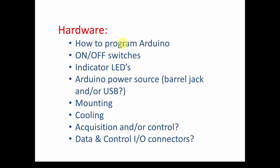We have to think about on/off switches — for power to the Arduino and for what we're measuring. What about indicator LEDs so we know when something is powered on? And what's the power source going to be? You can use a barrel jack (7–12V DC) or the USB connector to power the Arduino. Do we want a separate barrel jack on the box, a USB connector, or both? We also need to think about mounting the Arduino and our opto-isolator circuit inside the box.